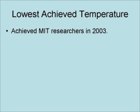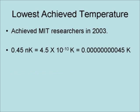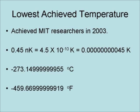The lowest temperature ever achieved was achieved by MIT researchers in 2003. That temperature was 0.45 nano Kelvin, which is 45 ten billionths of a Kelvin, or 45 ten billionths of a degree Celsius above absolute zero. And here is the same temperature in Celsius and Fahrenheit respectively.